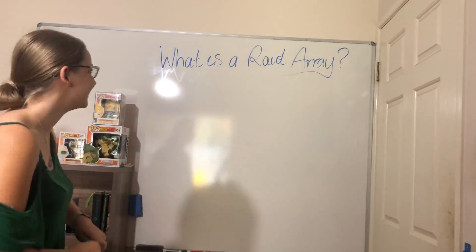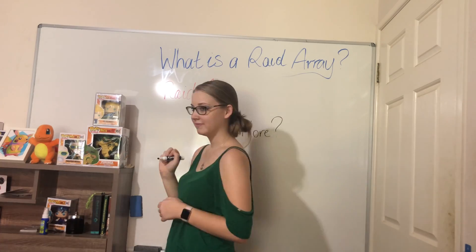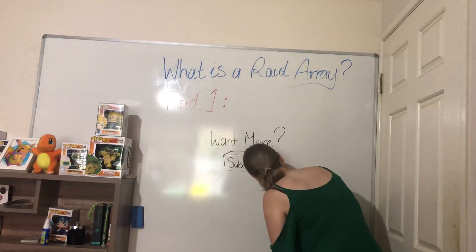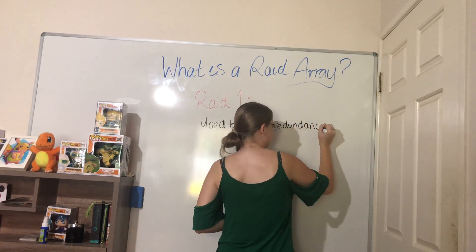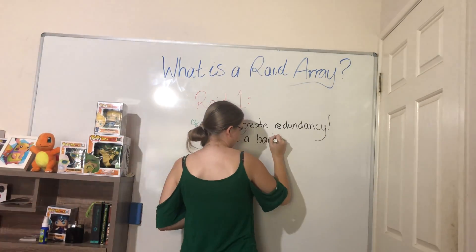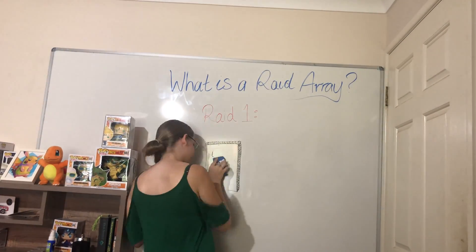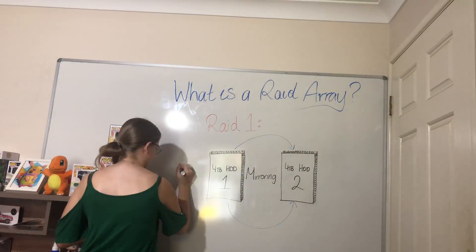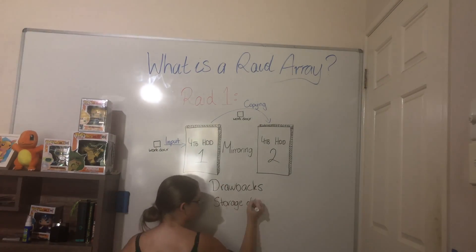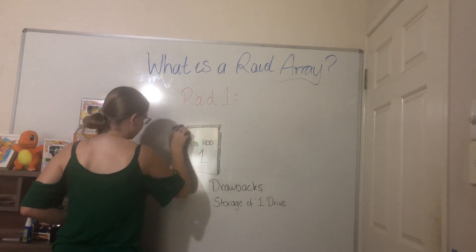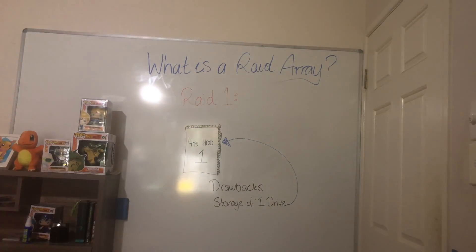If people don't know what a RAID 1 array is, basically there are a few different types of RAID arrays, but for the sake of this video I'll just be covering RAID 1. A RAID 1 array is a very simple and straightforward array used to create redundancy, which essentially means if something fails, we have a backup. The way RAID 1 does this is by taking two drives and using what's known as mirroring - whatever you put on one drive is immediately copied to the second drive. The drawback is that you only get the storage of one hard drive despite putting two in your system.